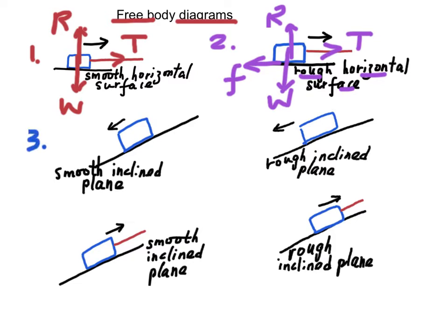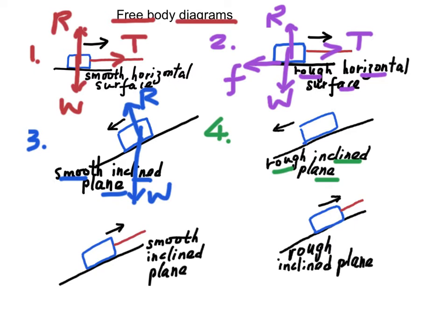In case three, a block of mass M slides down a smooth inclined plane. The forces on the block are its weight and normal reaction only. In case four, a block of mass M is moving downward along a rough inclined plane. In this case, the forces acting on the mass are the weight, the normal reaction, and frictional force.